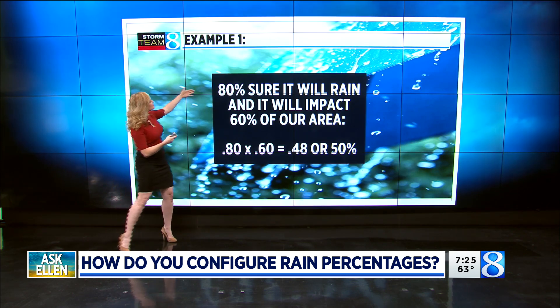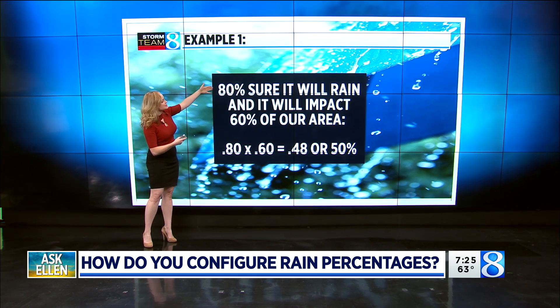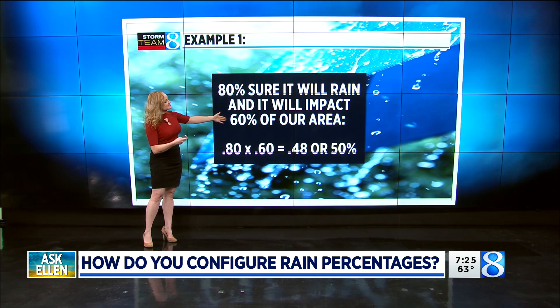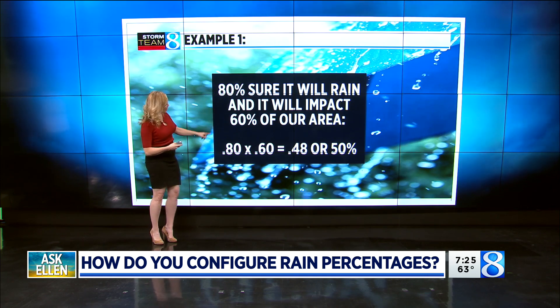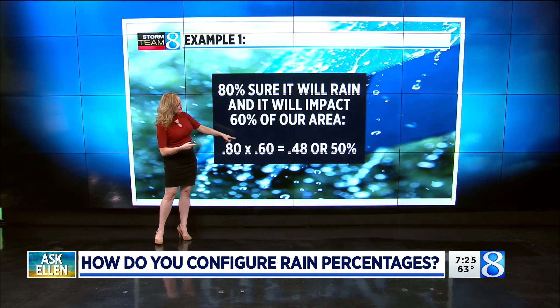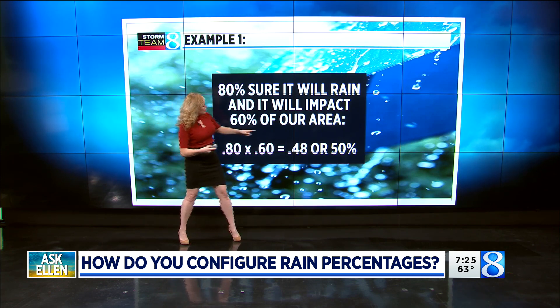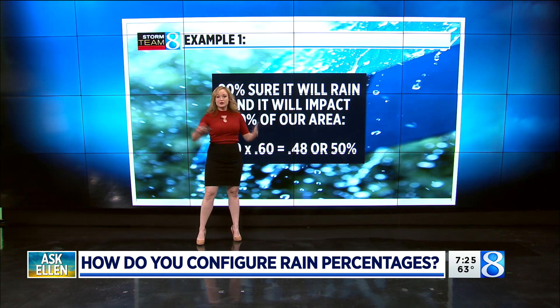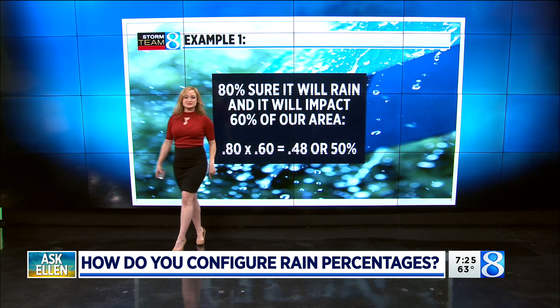So let's say we're 80 percent sure it will rain, and it will only impact 60 percent of our area. Well, 0.8 times 0.6 gives us about 0.48, or 50 percent. So we would put 50 percent for that day.